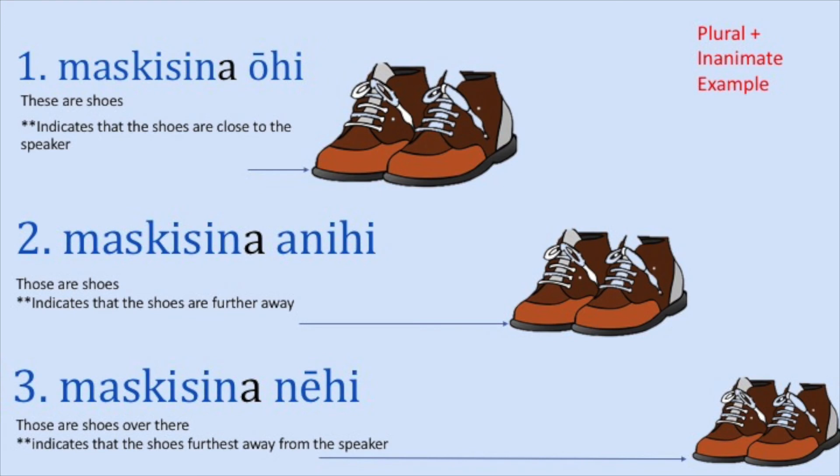In this example we see demonstratives for plural inanimate nouns. We have our two shoes. Number one shows these shoes that are closest to the speaker: Maskisinna ohe. A little bit further away: Maskisinna anehe. And then a lot further away, number three: Maskisinna anehe.